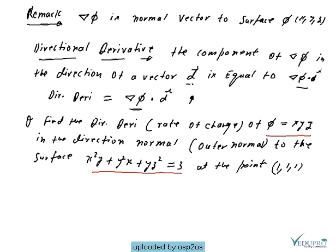The direction is the outer normal or normal vector to the surface. So first we need the unit vector in that direction — the outer normal to the surface. We know the outer normal is always del psi. So let the surface psi be: x²y + y²x + yz² − 3 = 0.